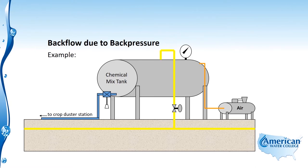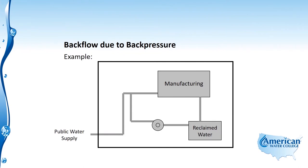This is an example of backflow due to back pressure. An air gap in this situation would solve this problem and prevent backflow. Another example of backflow due to back pressure is in a manufacturing plant where they reclaim their water.